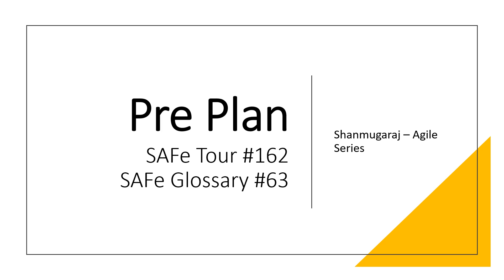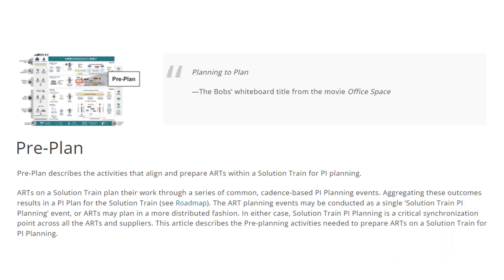We are currently discussing topics in SAFe 6.0, particularly glossary items. Today's topic is pre-plan. Pre-plan describes the activities that align and prepare ARTs within a solution train for PI planning. This pre-plan activity is specific to the large solution SAFe configuration, and it is one of the activities that helps you align and prepare ARTs within a solution train. ARTs on a solution train plan their work through a series of common cadence-based PI planning events.